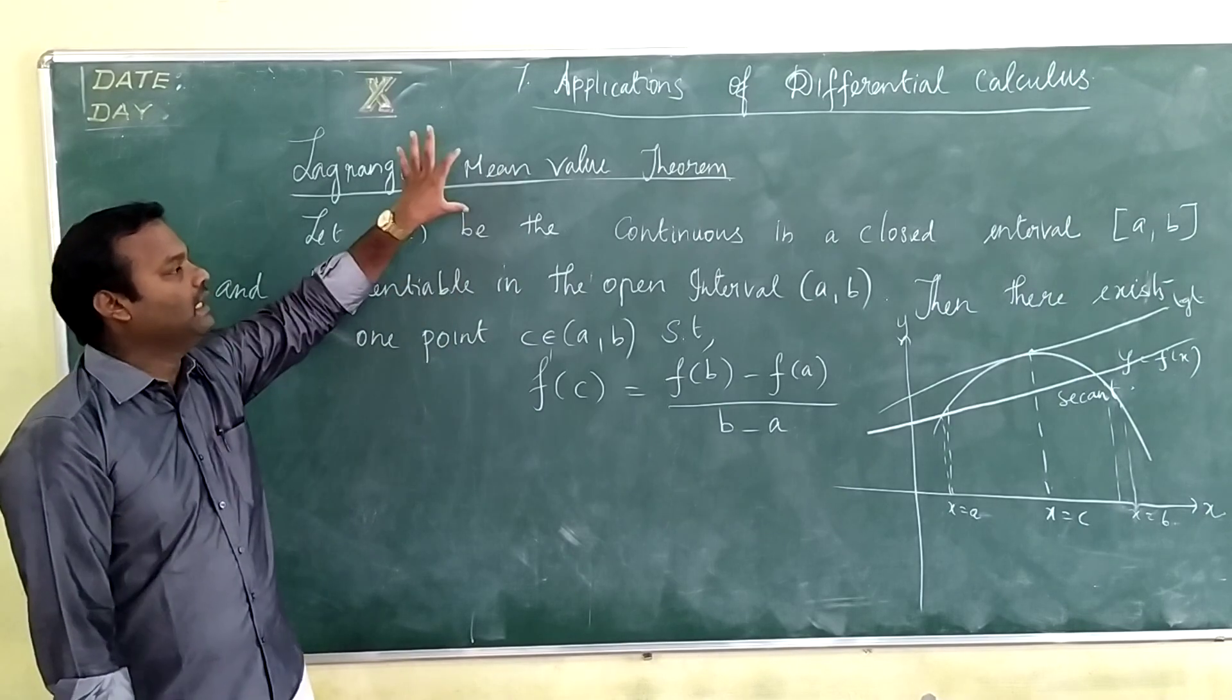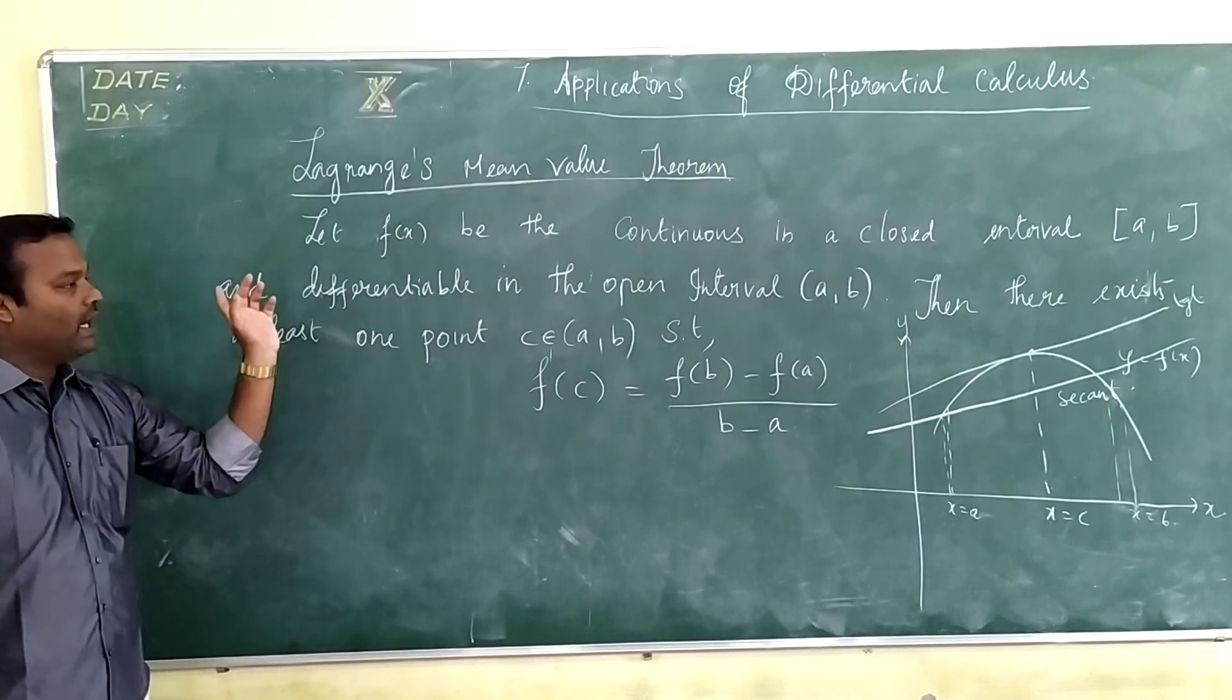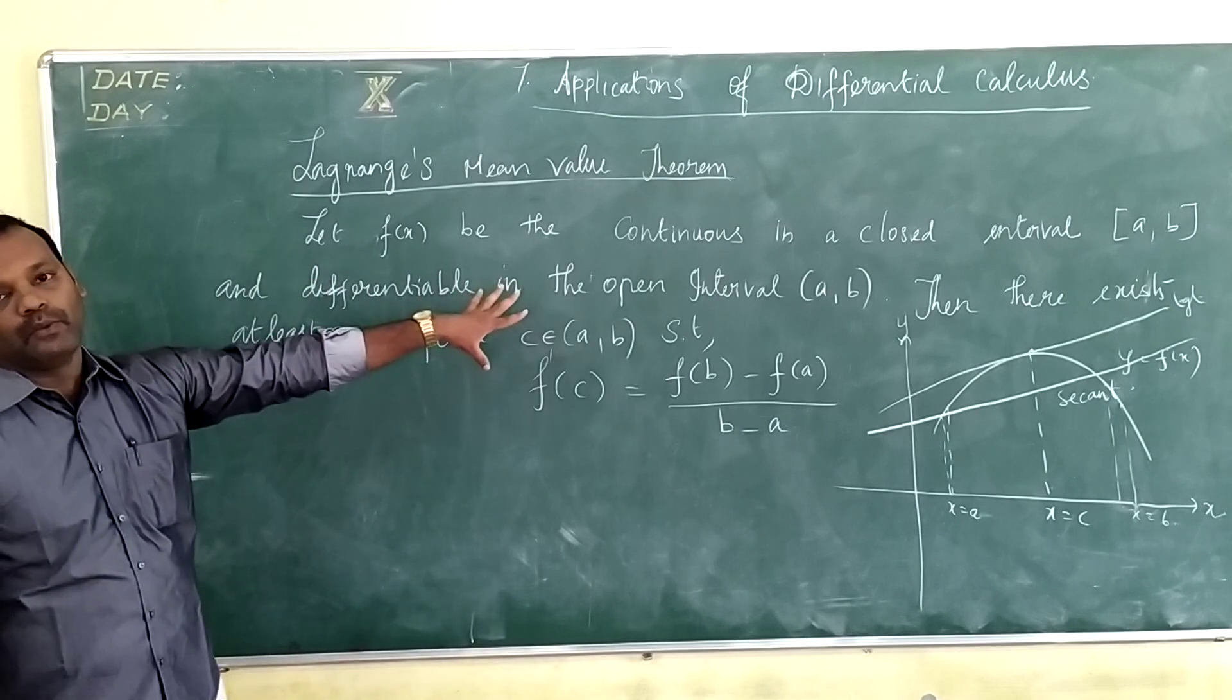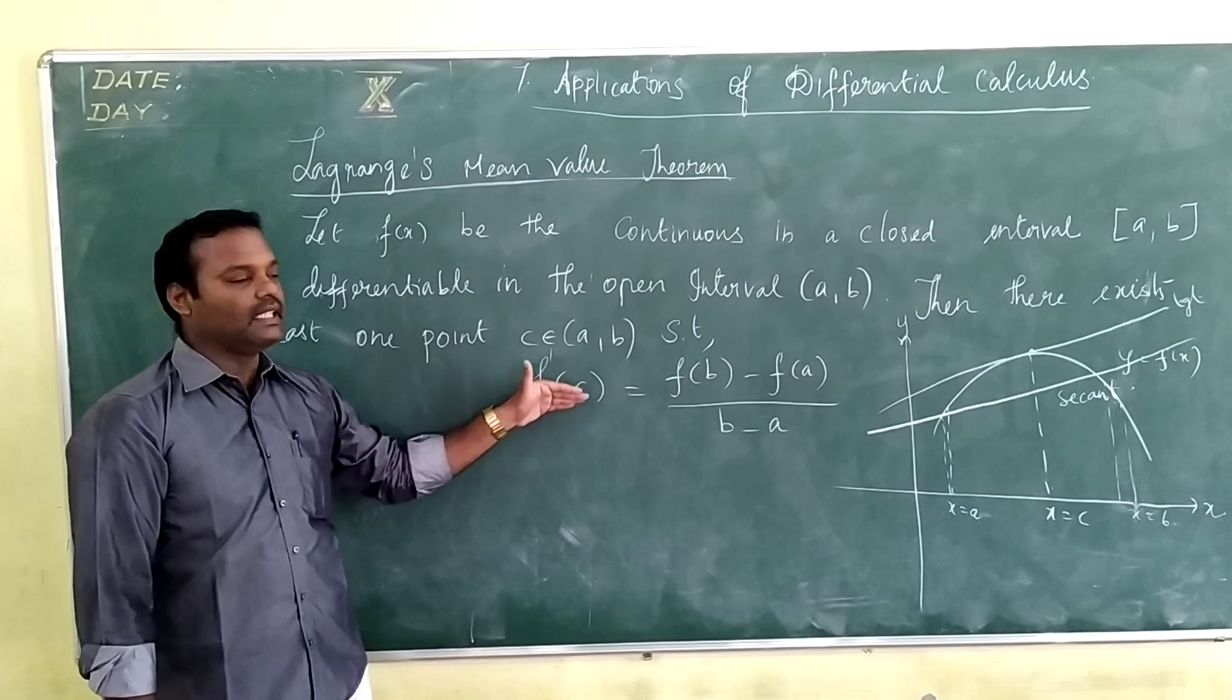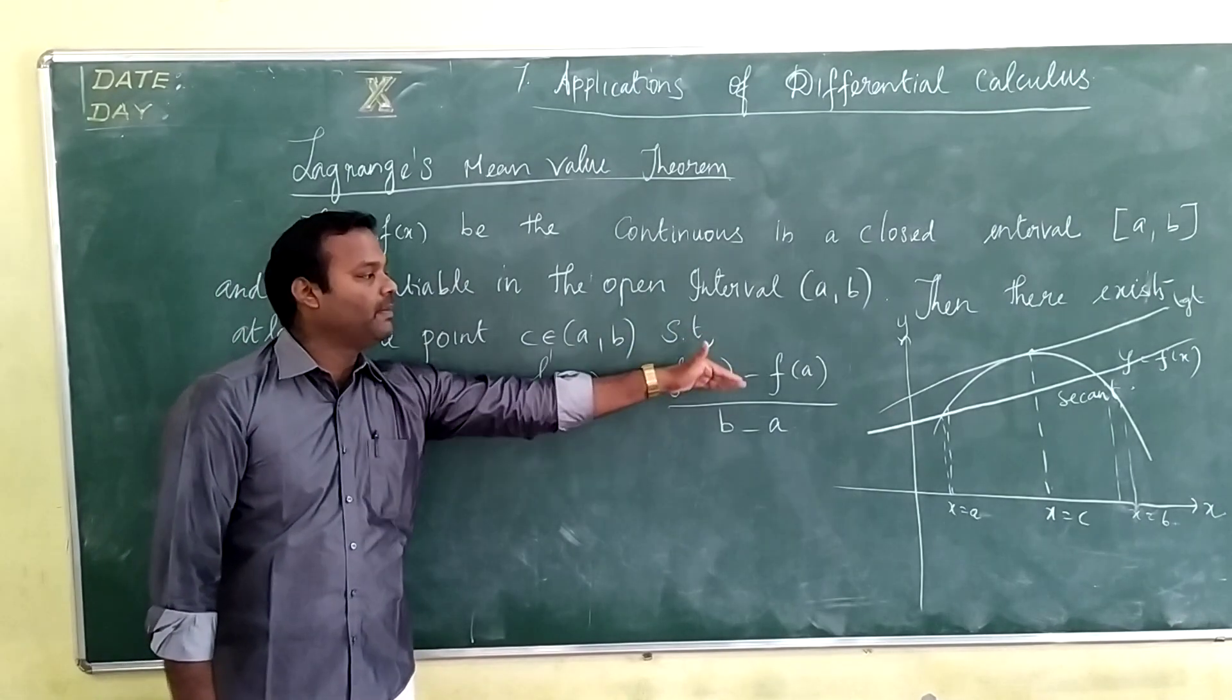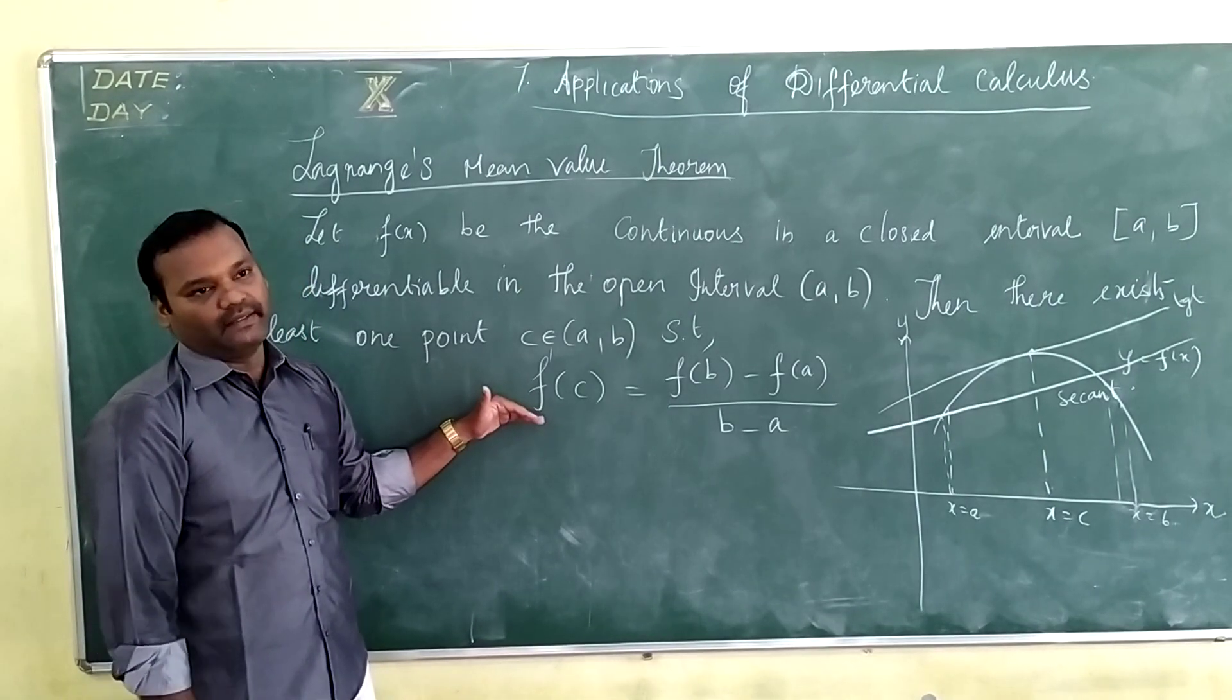You have to remember only two things. The function should be continuous on the closed interval [a, b], and the function should be differentiable on the open interval (a, b). Then there exists a point c such that f'(c) equals f(b) minus f(a) divided by b minus a.